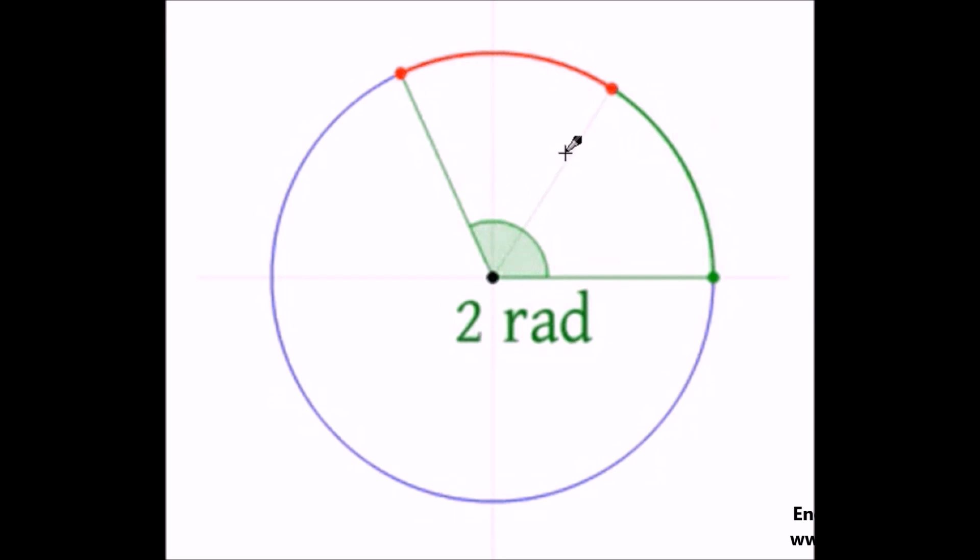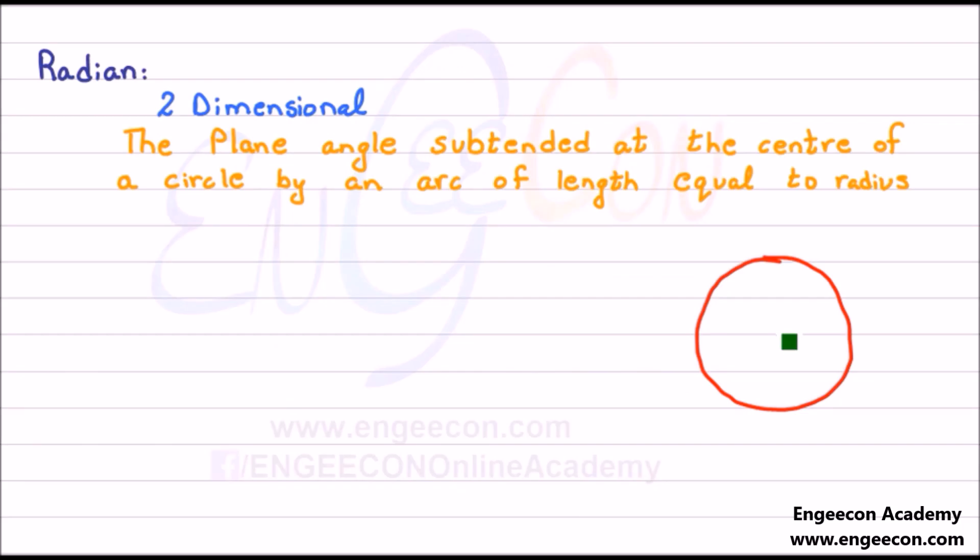If we divide a circle into radian parts, then half circle is equal to π radian and the whole circle is equal to 2π radian.